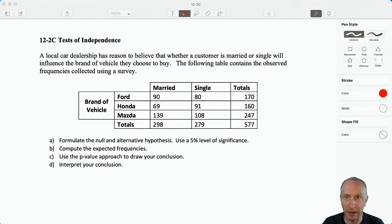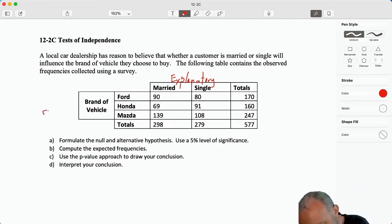So let's jump into it. A local car dealership has reason to believe that whether a customer is married or single will influence the brand of vehicle they choose to buy. The following table contains our observed frequency. Here we have our explanatory variable, marital status, and here we have our response variable. The type of vehicle they choose to buy is somehow dependent on whether they're married or single. Or we could say being married or single somehow explains or predicts the type of vehicle that they might purchase.